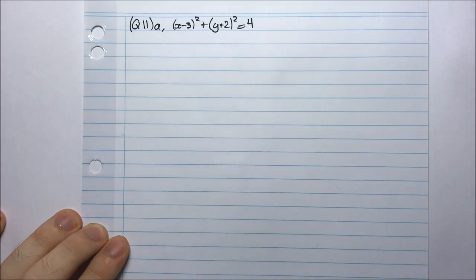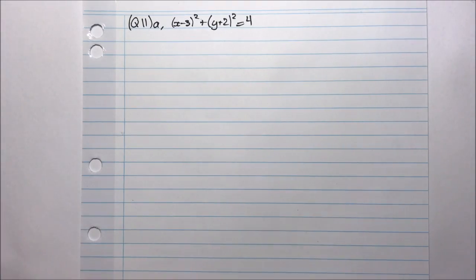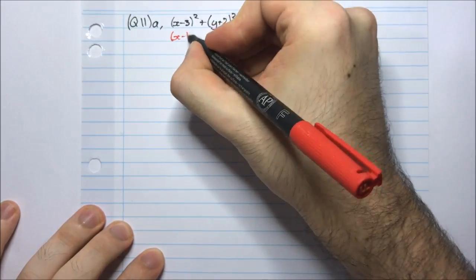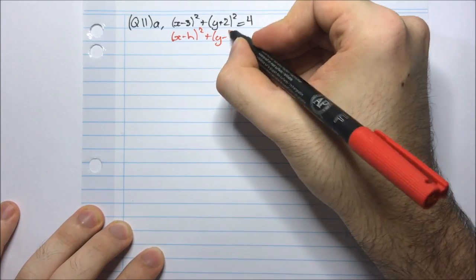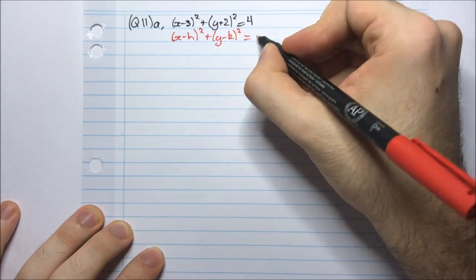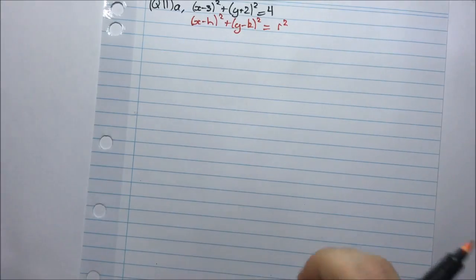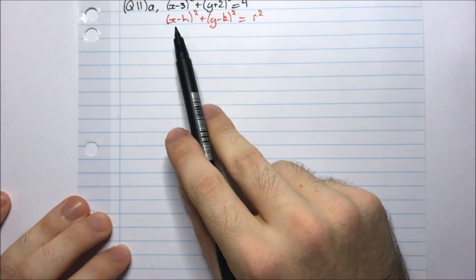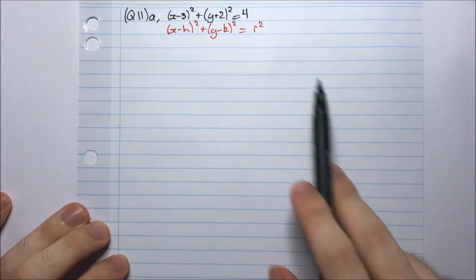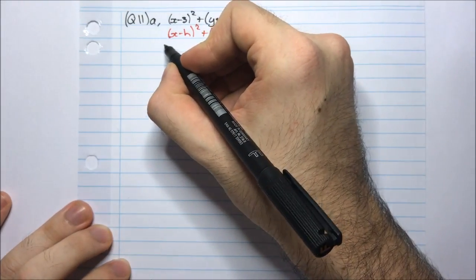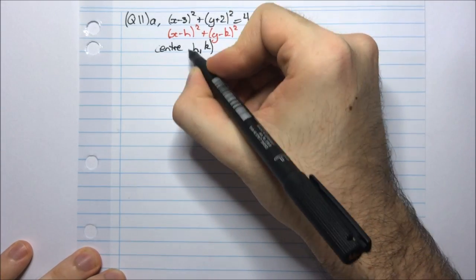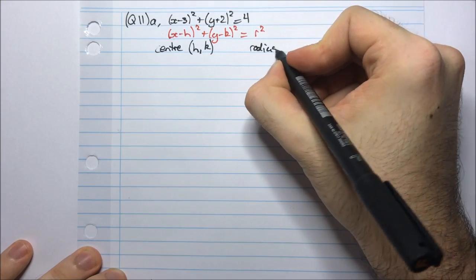Now this function is of the form (x - h)² + (y - k)² = r², and hopefully you should know that this is a circle. The circle has a center at (h, k) and has a radius of r.